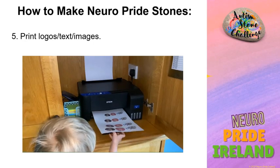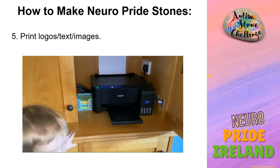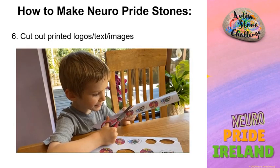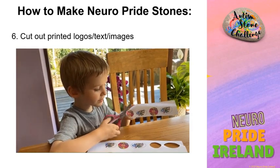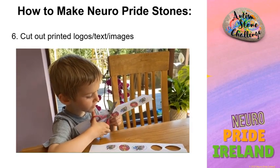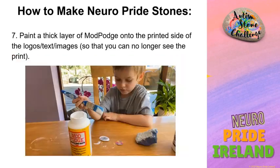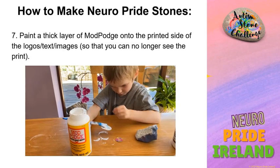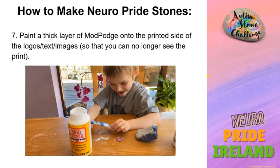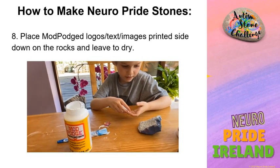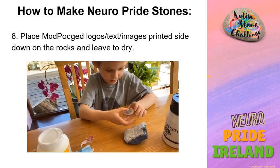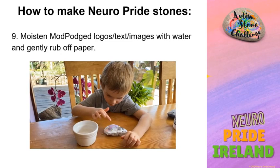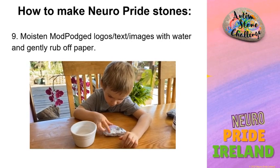Logos, images or text can be printed onto paper. Make sure they are printed in reverse — if not, all of your text will be back-to-front on your rocks. Next, cut out the printed logos, text or images, as our mascot here is doing a great job of demonstrating for us. Paint Mod Podge onto the printed side of the logos, text or images. Paint it on so thick that you can no longer see the print. Then, place the Mod Podge logos, text or images printed side down on the rocks and leave them to dry. Moisten the Mod Podge logos, text or images with water and gently rub off the paper.